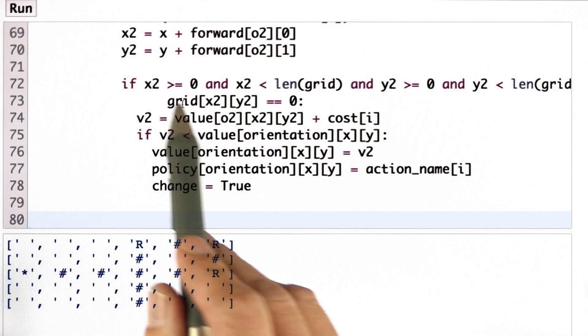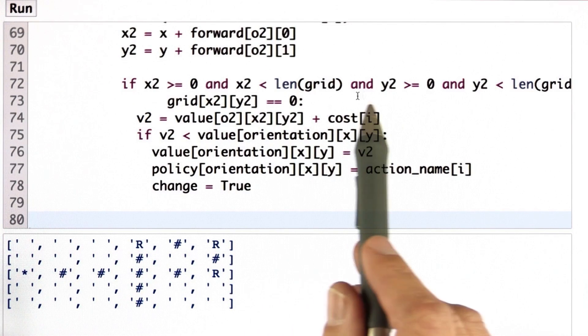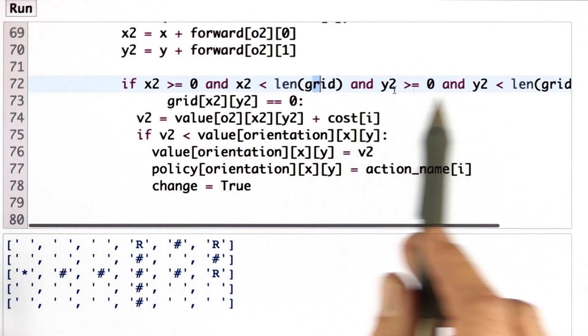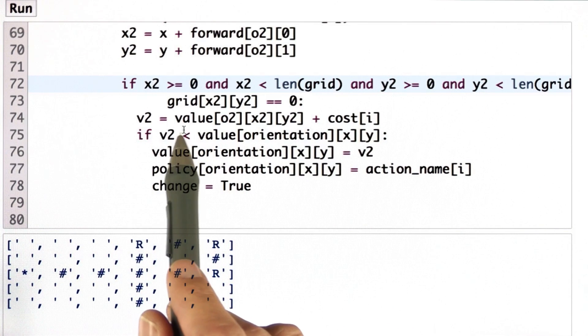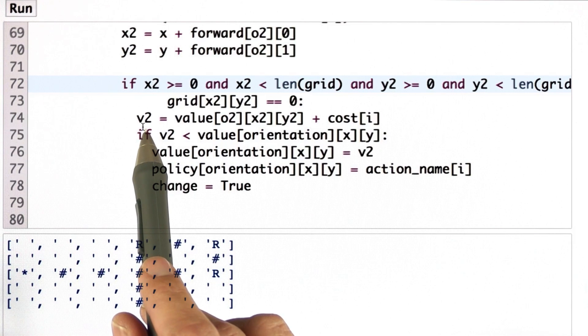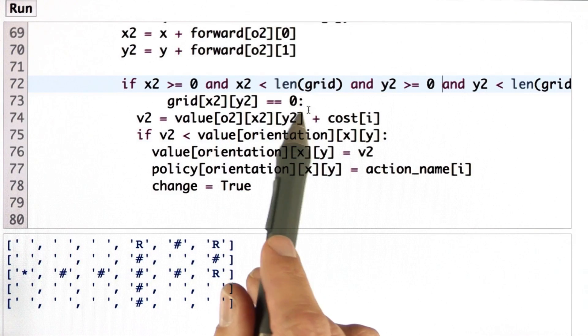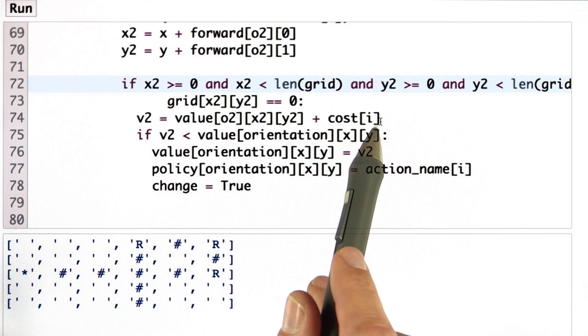Scrolling down further, if we arrived at a valid grid cell in that it's still inside the grid and is not an obstacle, then like before, we add to the value the value of this new grid cell plus the cost of the corresponding action.